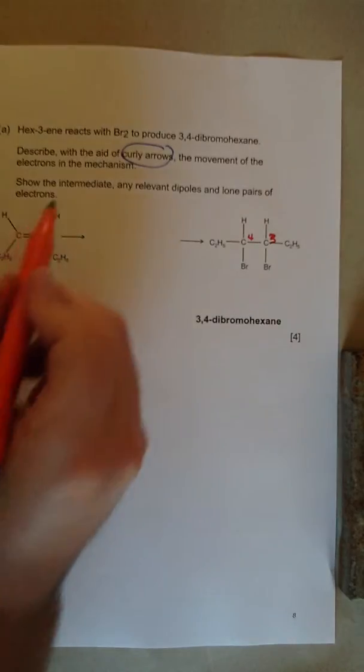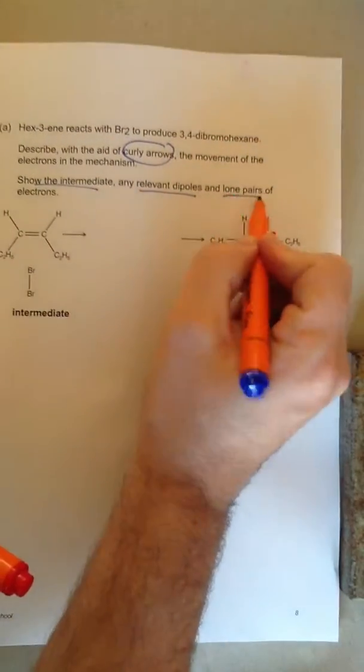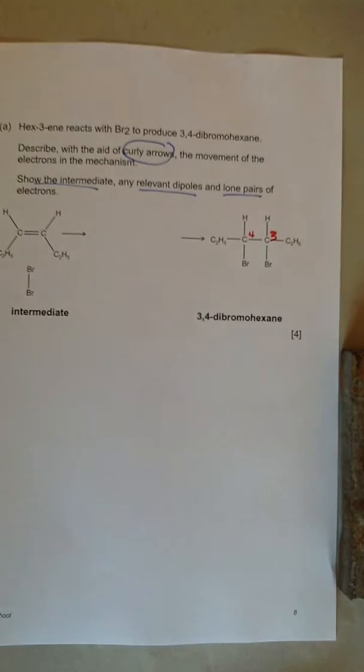It says show the intermediate, any relevant dipoles and lone pairs of electrons. So this is an electrophilic addition. The bromine is going to add across the double bond.